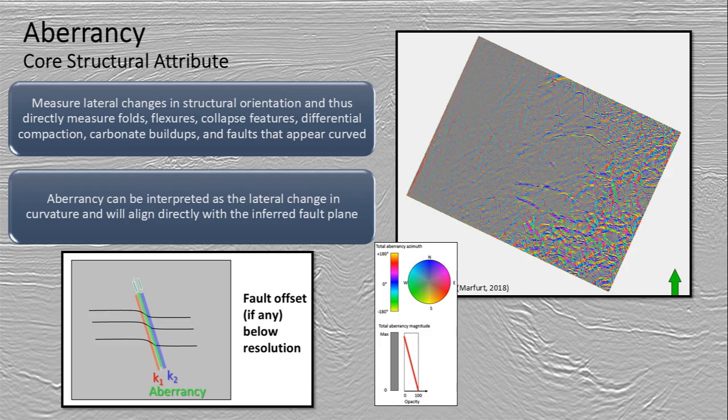Aberrancy is another structural attribute that can be used to help identify faults and fault offsets, oftentimes ones that are below resolution. You can measure aberrancy in terms of its magnitude and its orientation.